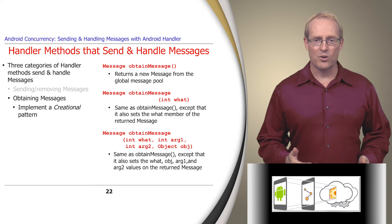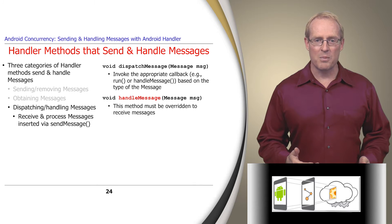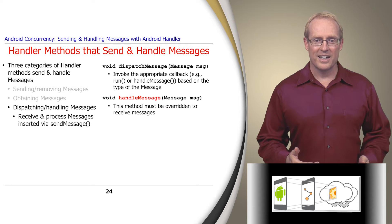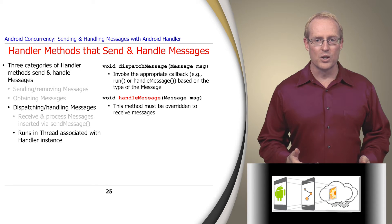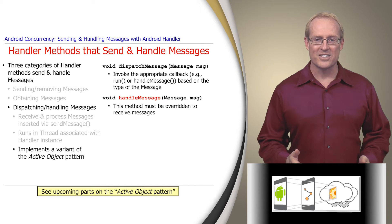The third and final category of handler methods are used to dispatch and handle messages via the handleMessage hook method, which must be overridden to receive and process messages queued via sendMessage. HandleMessage runs in the context of the thread-specific looper associated with the handler instance, in accordance with the message-passing variant of the active object pattern, as discussed in upcoming videos.